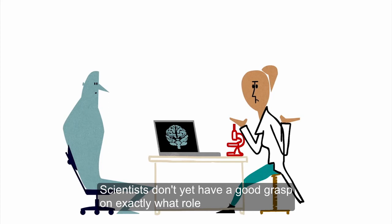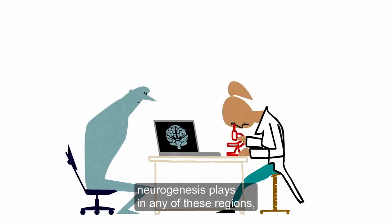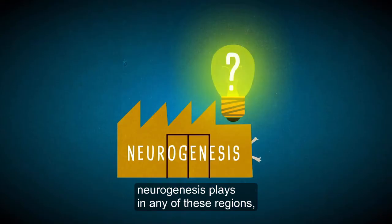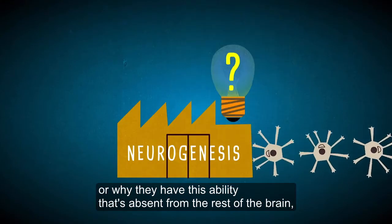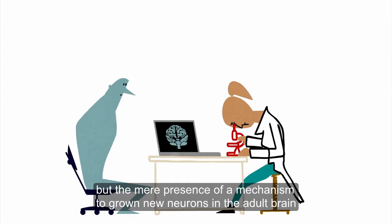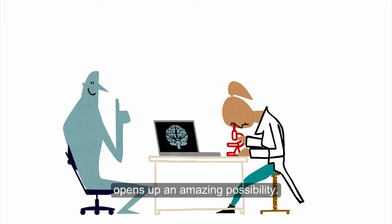Scientists don't yet have a good grasp on exactly what role neurogenesis plays in any of these regions, or why they have this ability that's absent from the rest of the brain. But the mere presence of a mechanism to grow new neurons in the adult brain opens up an amazing possibility.